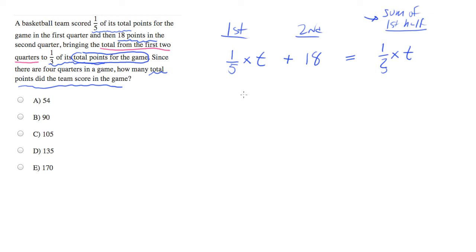So the first thing you want to do is collect like variables. We have t's on both sides, so I'm going to subtract one-fifth t from both sides. What we'll end up with is 18 equals one-third t minus one-fifth t.